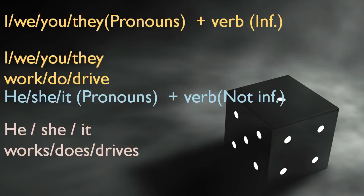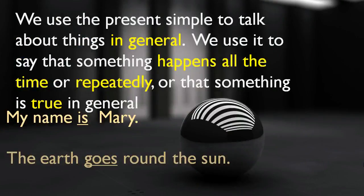But when the subject changes from I, we, you, they to he, she, it, the verb is not infinitive. Like he works, she works, it works, and so on. Works is not an infinitive verb. Same idea with he does, she does, it drives me crazy, and so on.